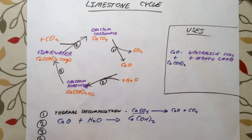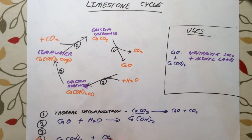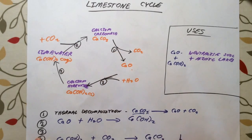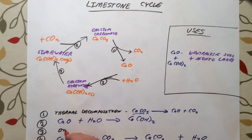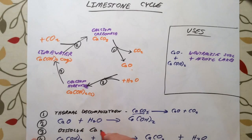Reaction four is adding carbon dioxide to limewater, or calcium hydroxide, and we get calcium carbonate back. The full symbol equation is: Ca(OH)2 + CO2 → CaCO3 + H2O. The leftover atoms — one oxygen and two hydrogens — give us water.